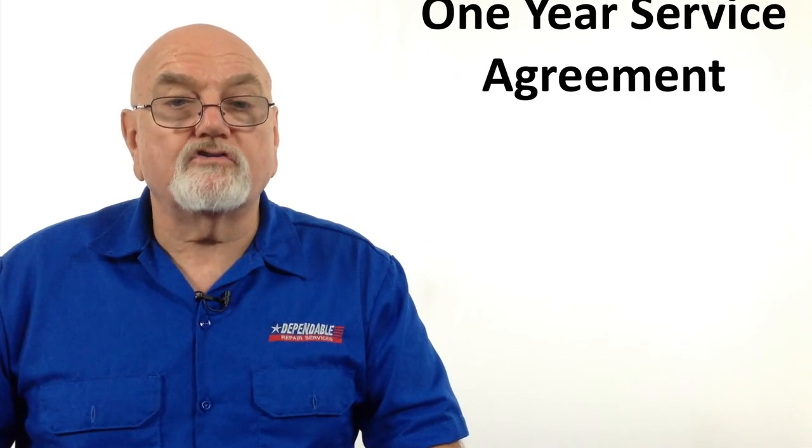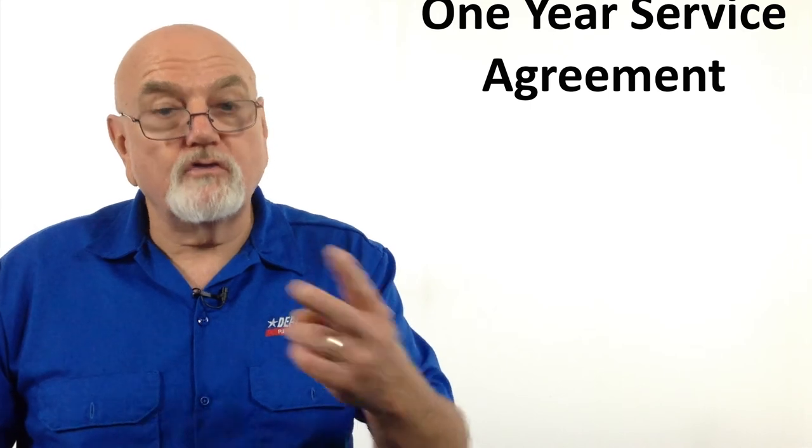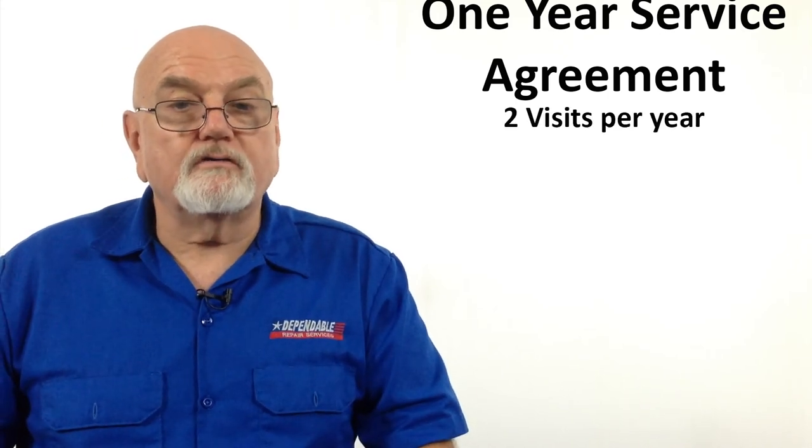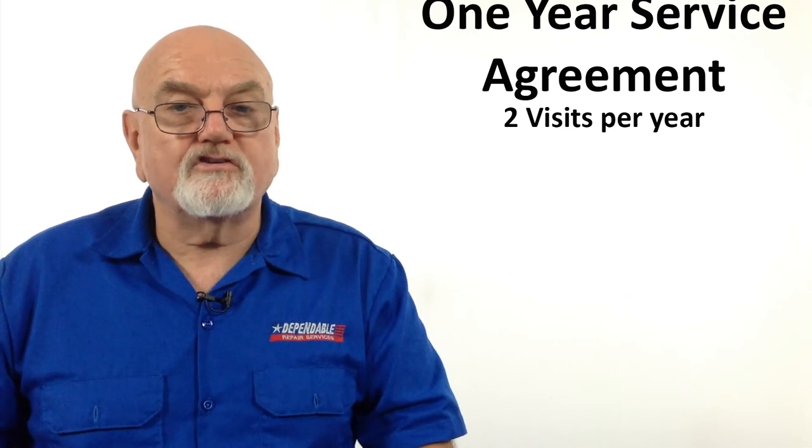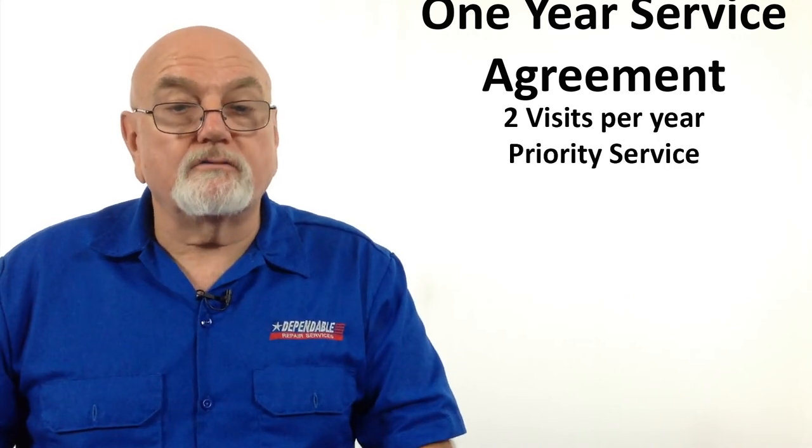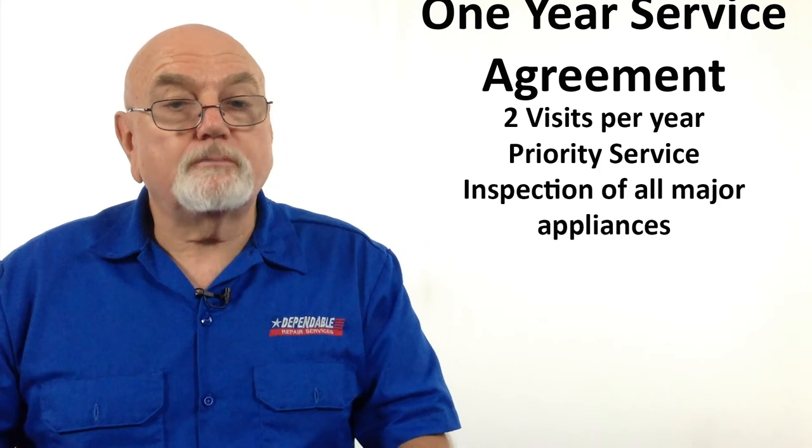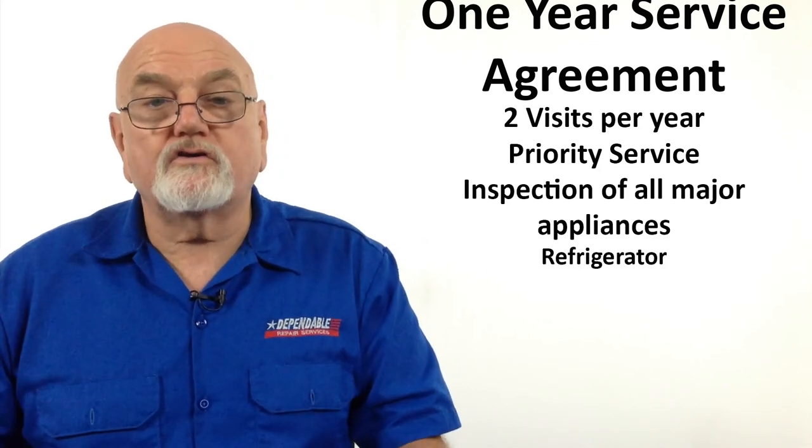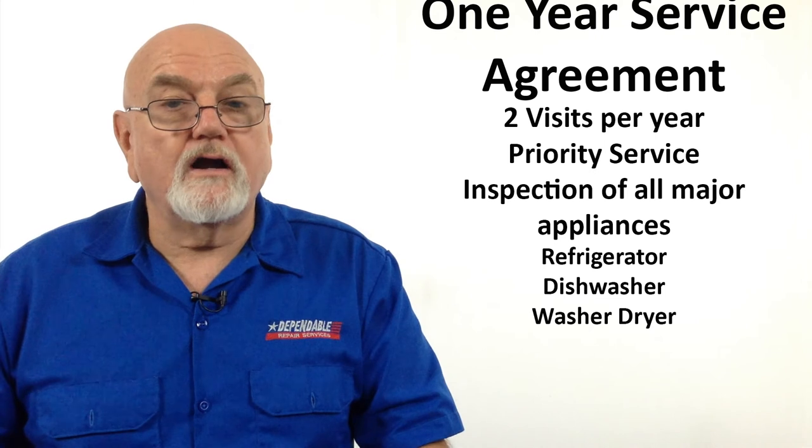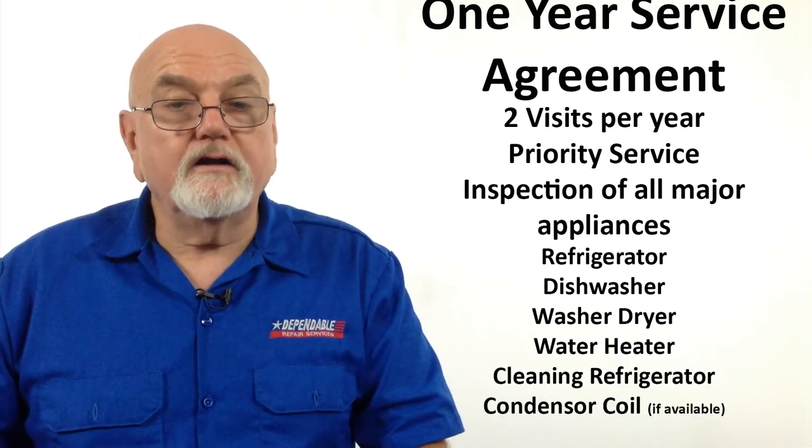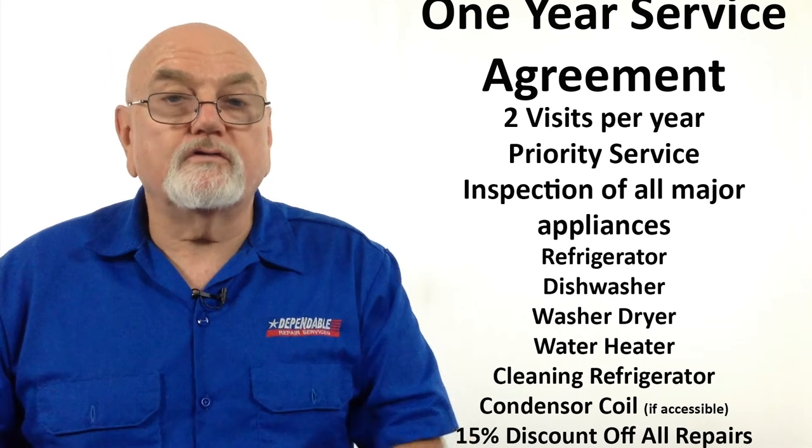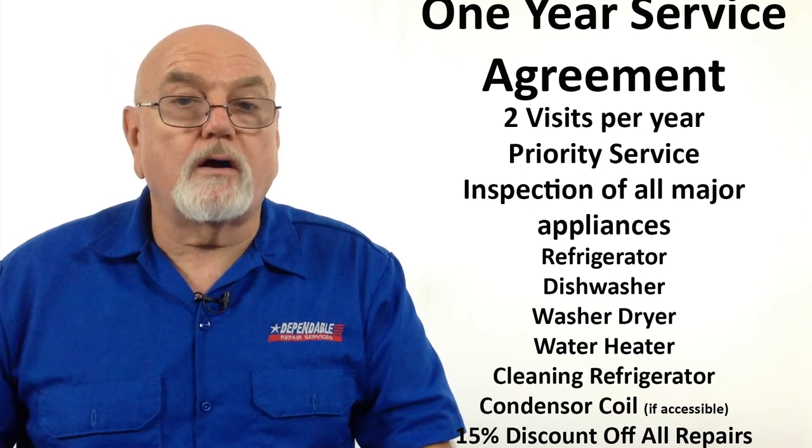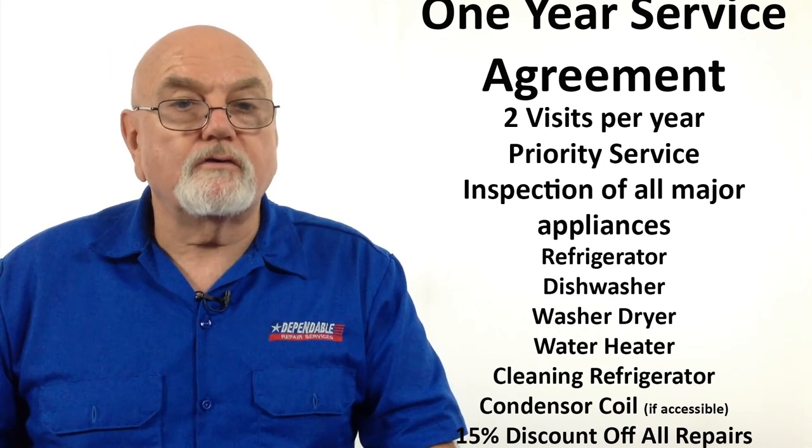All new systems come with a one-year service agreement, which includes two visits and cleanings per year for adjusting your new system to keep it running at maximum efficiency. It includes priority service if repairs are needed, an inspection of all your appliances including your refrigerator, your dishwasher, your washer, your dryer, and your water heater, and cleaning the refrigerator condenser coil if accessible. It also includes a 15% discount off all products we repair during your service agreement period.